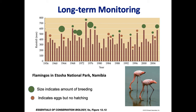Community science can be really helpful for long-term monitoring. Here is an example of a long-term dataset looking at flamingos in Namibia. You can see the amount of rainfall shown by bars through time, the green indicates the amount of breeding, and the red years are years where there were eggs produced but no hatching individuals. With information like this, we can correlate rainfall with breeding success and the amount of breeding that occurred, to better understand how different environmental factors affect population size as well as reproduction.